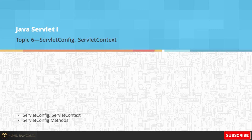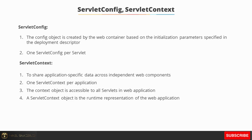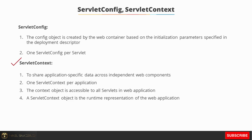The ServletConfig object is created by the web container based on the initialization parameters specified in the deployment descriptor file, or the web.xml file. There has to be one ServletConfig per servlet. The ServletContext is used to share application-specific data across independent web components. There can be one ServletContext per application, and the context object is accessible to all the servlets in your web application. A ServletContext object is the runtime representation of the web application.